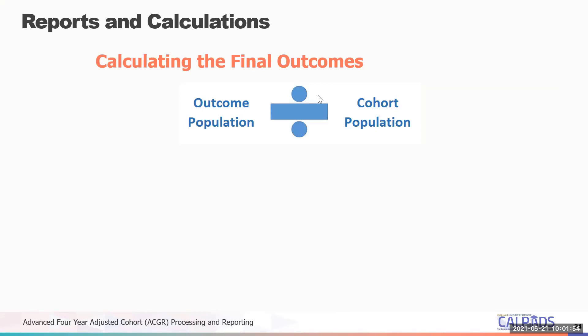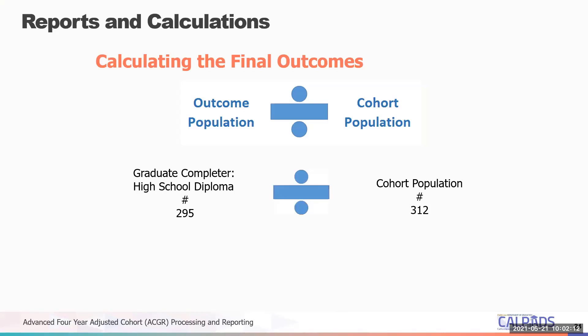Here's an example, also covered in the preview training. You take your high school diploma students — say 295 total out of 312 outcomes — divide that, multiply by 100, and that gives you your percentage. In this case, the high school has a diploma graduate rate of 94.55 percent.